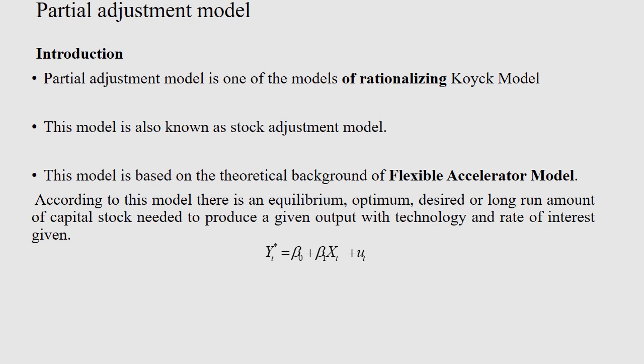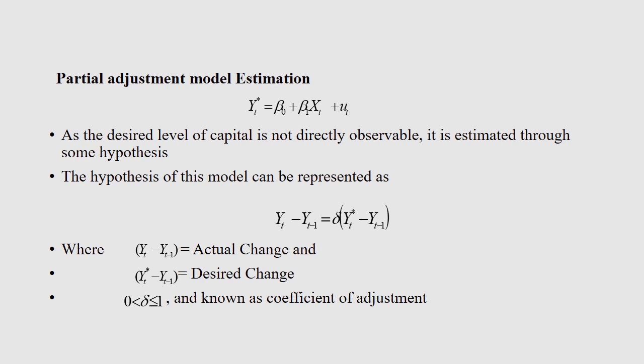According to the flexible accelerator model, there is an equilibrium or optimum or desired or long-run amount of capital stock needed to produce a given output, with technology and rate of interest given or constant. The basic model of the partial adjustment technique can be written as: yt_star = beta_naught + beta_1 * xt + ut. Here yt_star is the equilibrium or optimum or desired long-run amount of capital stock needed to produce a given amount of output. Since these expected values are not directly measurable, we go for certain hypothetical analysis.